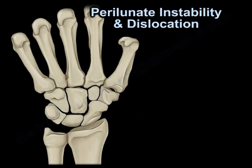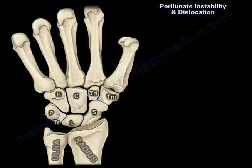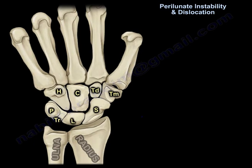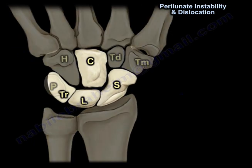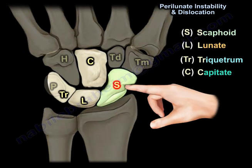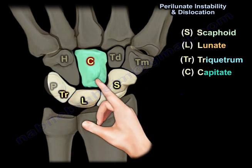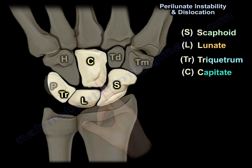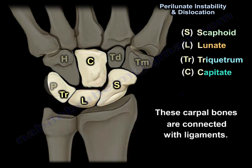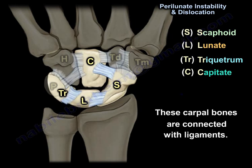Perilunate instability and dislocation. The arrangement of the scaphoid, lunate, triquetrum, and capitate — these carpal bones are connected with ligaments.